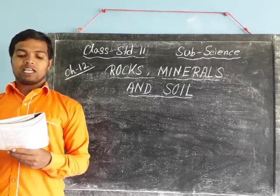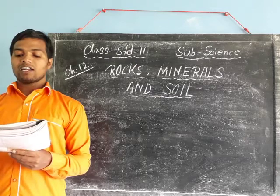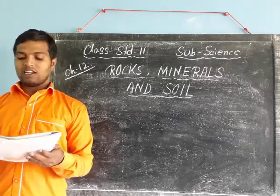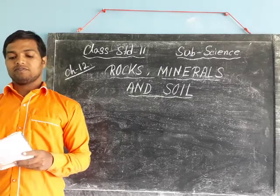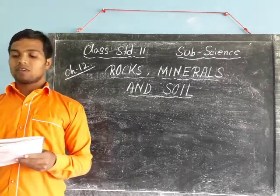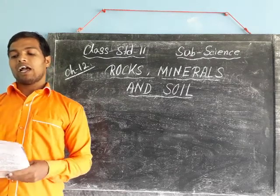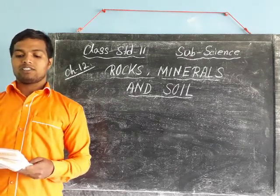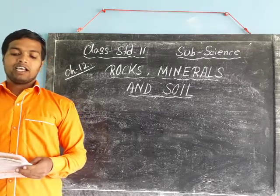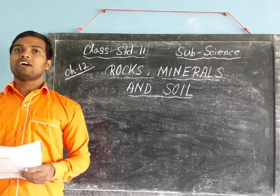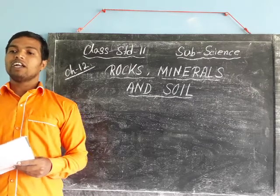Soil collected from different places has different colors — some are light brown, some dark brown, and some are even red. Different places have different colored soil because they are made up of different rocks.